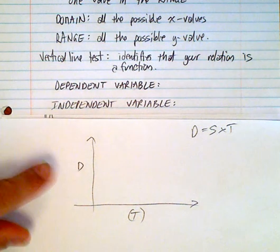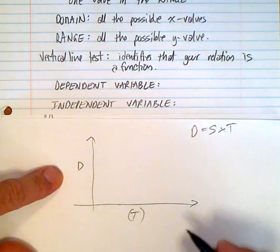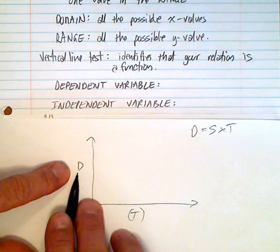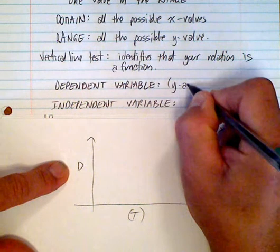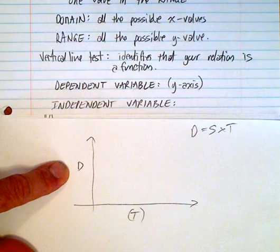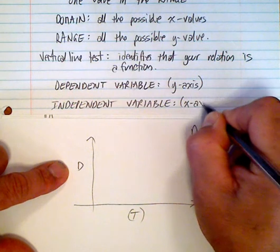So, the distance is dependent on the time, which means that the distance is on the y-axis. It's dependent. So, we're going to look at the y-axis as being the dependent variable, and the x-axis as being the independent variable.